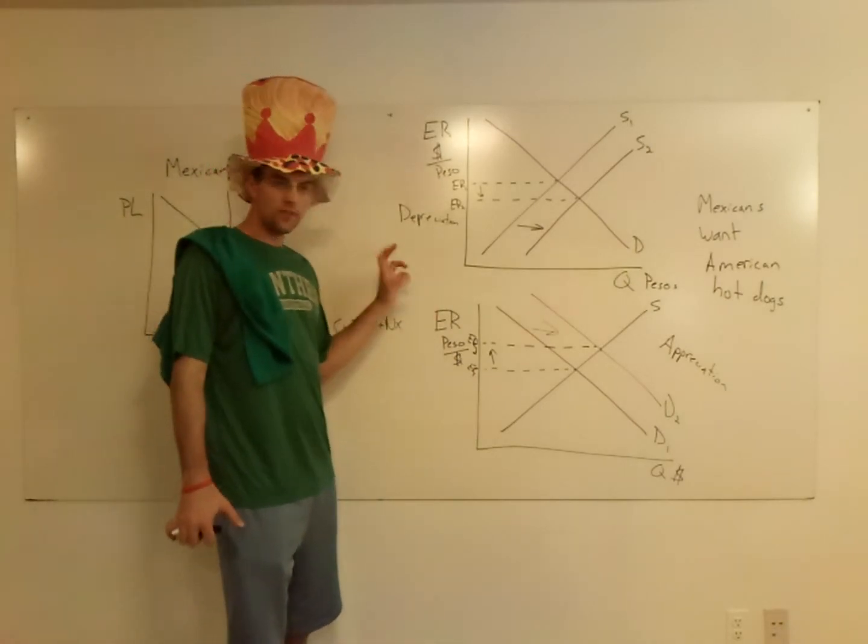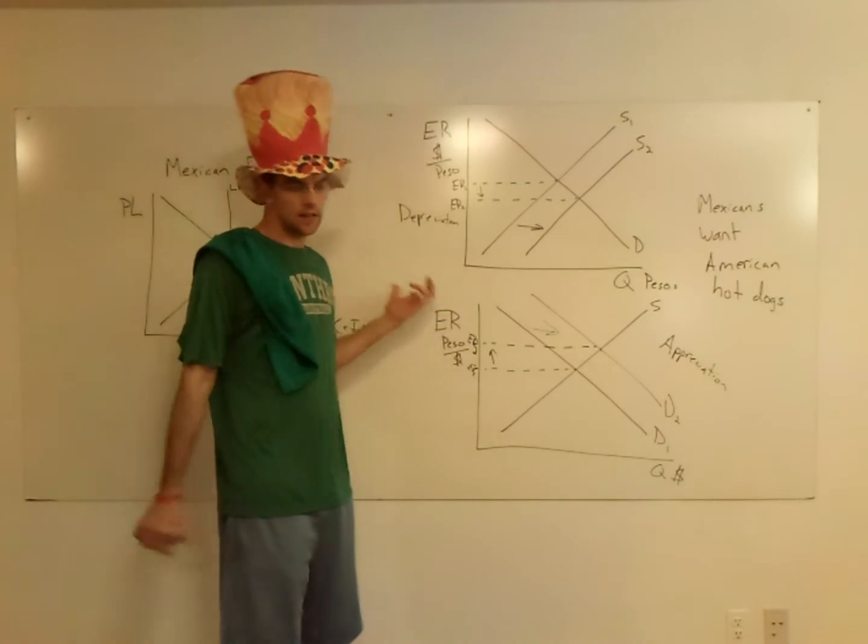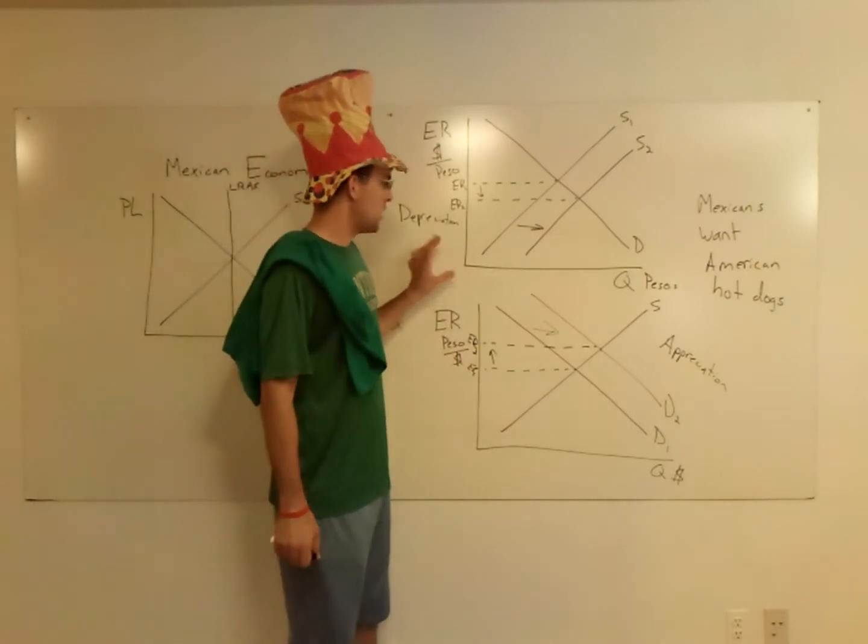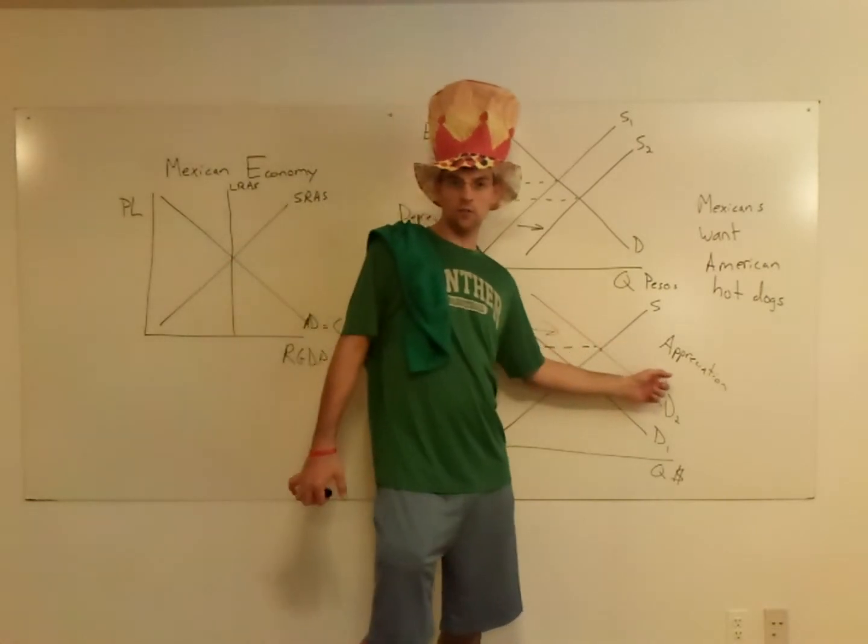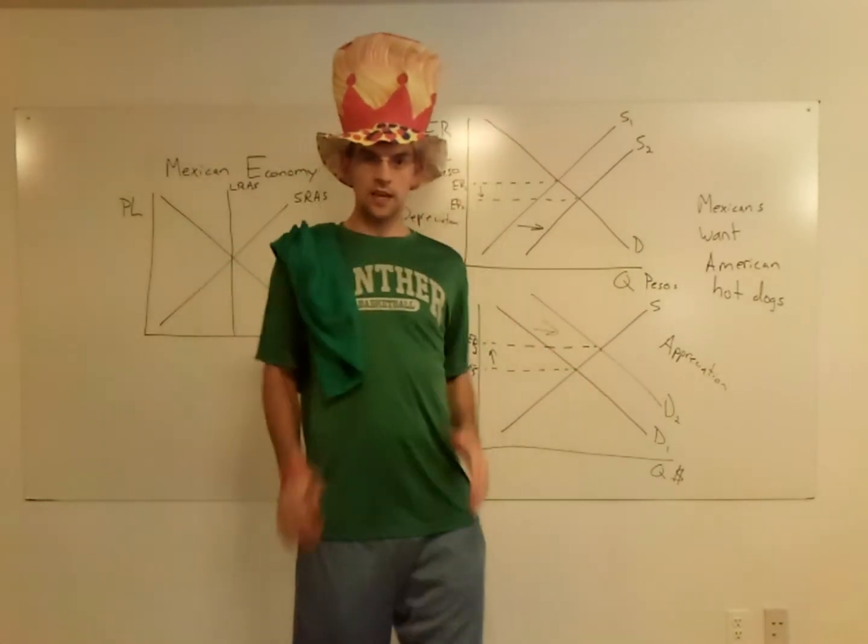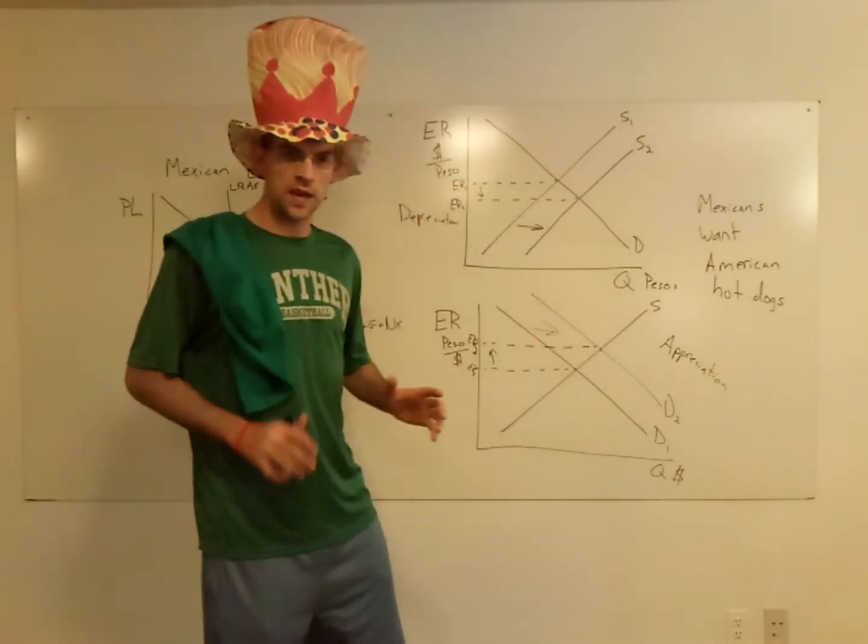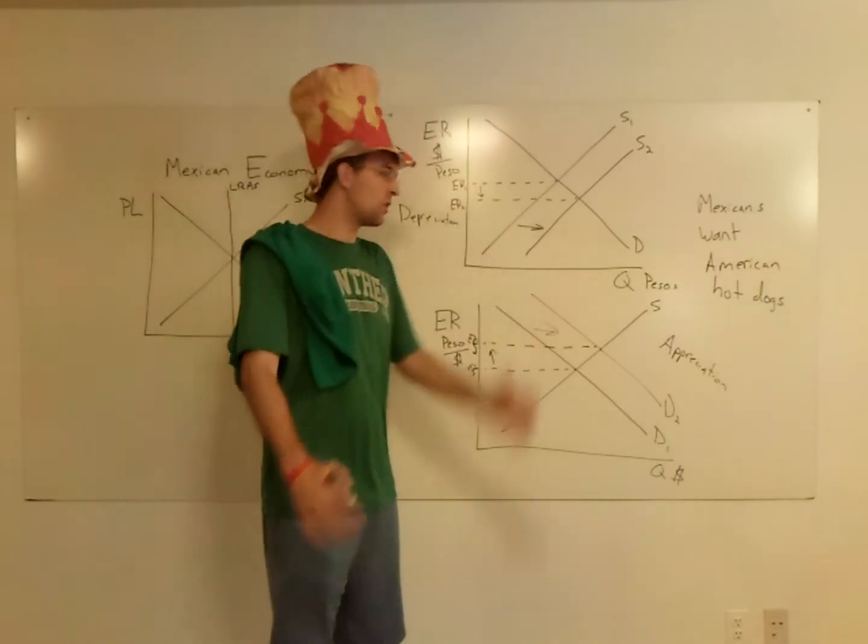One way you can check these is if you have to do two graphs like this—not that they normally make you do that—but if one currency depreciates, the other has to appreciate. They can't both work in the same direction. This is a little zero sum game. One guy is going up, the other guy is going down.